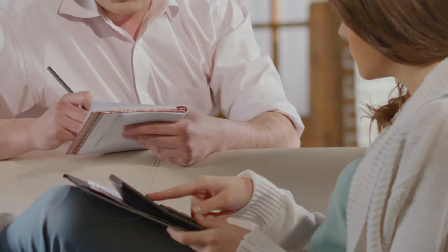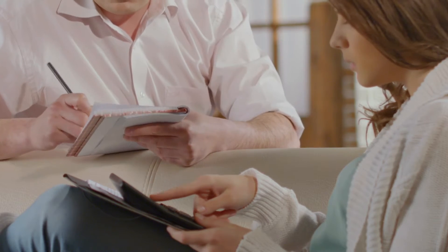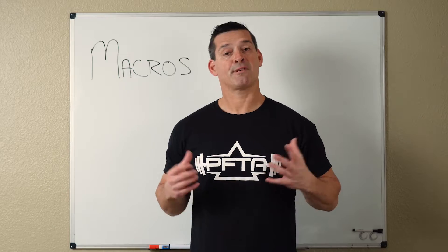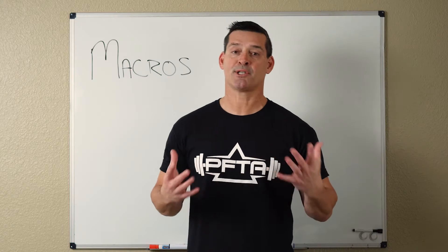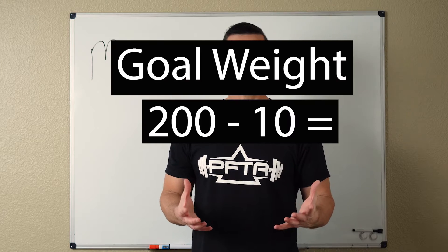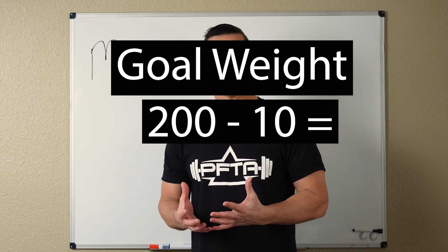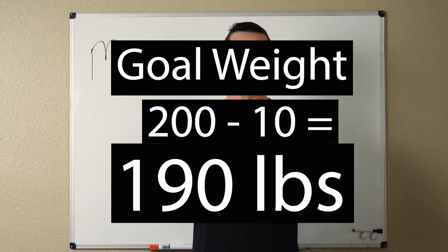But for now, let's just give you a good estimation. Step one: pick a good goal weight. For example, if I weigh 200 pounds and I want to lose 10 pounds to 190, my goal weight is going to be 190 pounds.